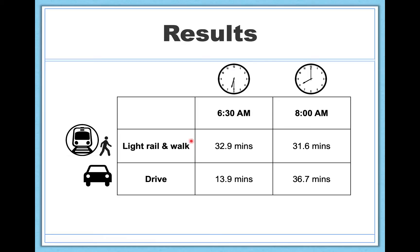Taking the light rail and walking is a very consistent mode of transportation — regardless of when I leave, it takes about the same amount of time. Driving is really inconsistent because of traffic at certain times of day. When I leave at 8 a.m. it's slow, but before most people are commuting, it's very quick. This is what we call an interaction — I have to incorporate both factors in my explanation. If a friend asked what's the best way to get to campus, I can't just say 'drive' or 'leave at 8' — I have to give both factors to provide a complete explanation. That's an interaction.